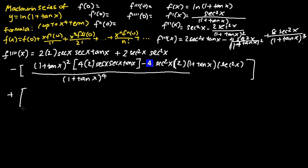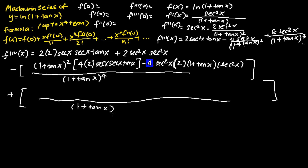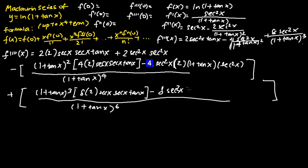For the last term, I also apply the quotient rule. The denominator becomes (1 plus tangent x) to the power of 6. In the numerator, I differentiate 8 sec squared x to get 8 times 2 sec x sec x tangent x, subtracting 8 sec squared x times 3(1 plus tangent x) squared times sec squared x. We can stop the differentiation here. The next step is to substitute x equals 0 into all the functions.